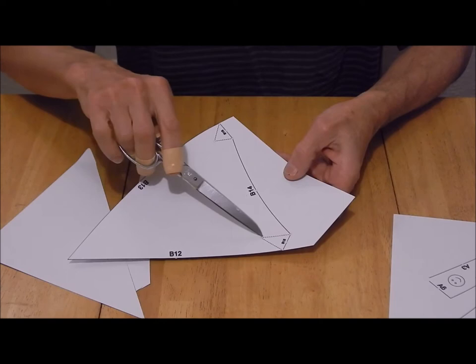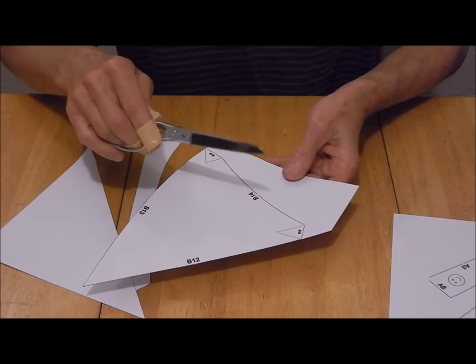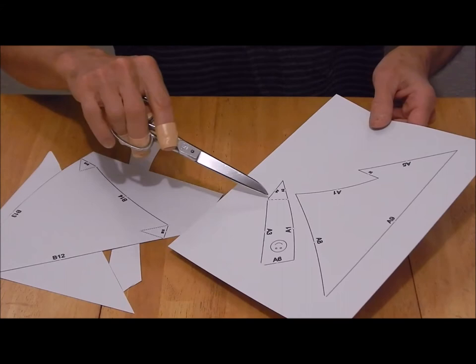In some places on the patterns, you'll see dotted lines. Tiny dotted lines are alignment reference points as you're assembling the sculpture later. There are larger dotted lines that are fold lines, and that will be indicated on the pattern.